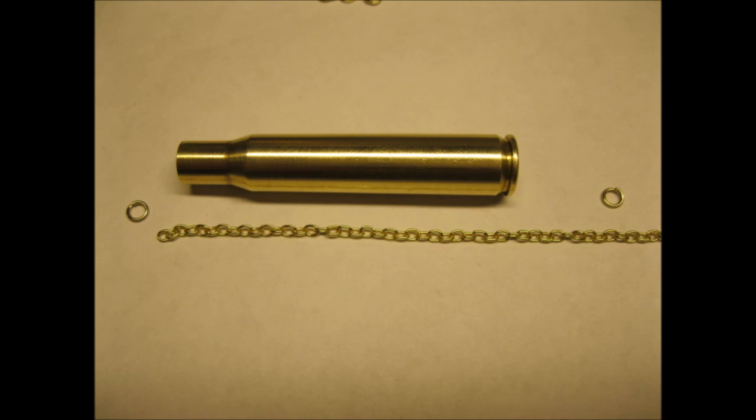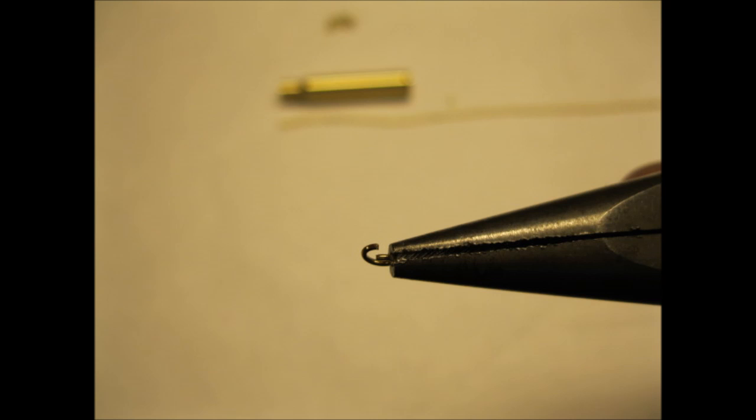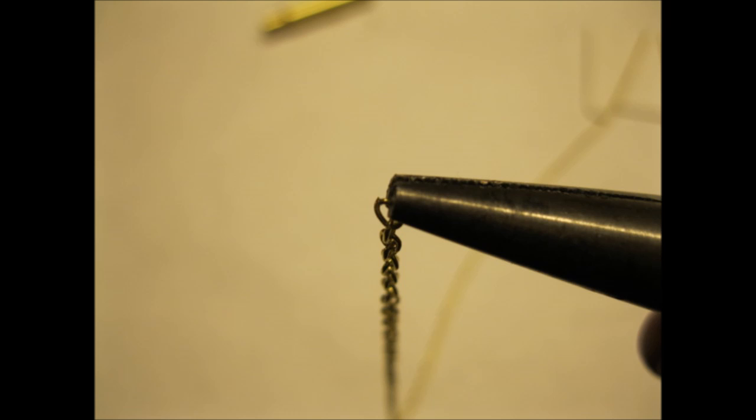So the plan was to run the chain through the opened up primer hole using one split ring as a stopper and one split ring to attach to the disc. The split rings opened up with the help of needle nose pliers. I used the pliers to close the ring after attaching the chain. The chain links could also be opened and closed the same way.